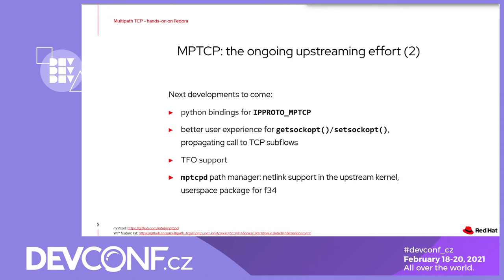We plan to improve the usability of the stack by adding Python bindings for the MPTCP protocol number. Moreover, we plan to improve the user experience for programs that need to call getSockOpt or setSockOpt. An MPTCP socket opens multiple TCP sockets in the kernel, so we need some machinery to route the SockOpt to the correct sub-flow. Last but not least, the next Linux kernel will be able to send Netlink notifications to userspace — for example, when the kernel receives an AddAddress packet — allowing usage of userspace path managers that can provide a richer control plane for the protocol.